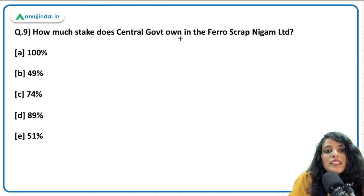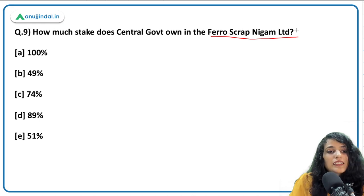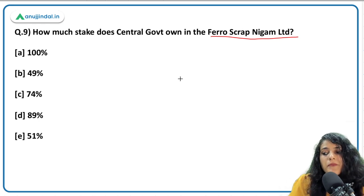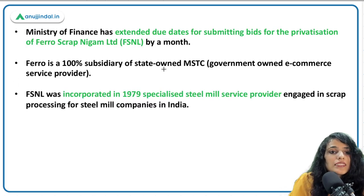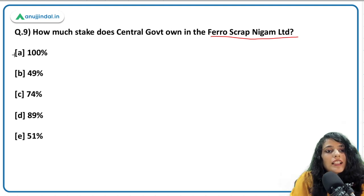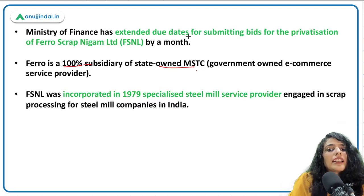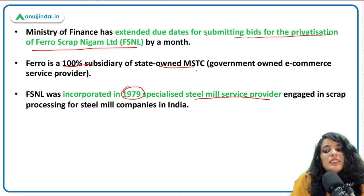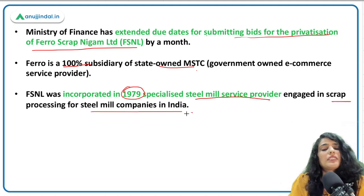The Ministry of Finance has extended the due date for submitting bids for the privatization of Ferro Scrap Nigam Limited, which is a 100% subsidiary of the state-owned MSTC — the government's e-commerce service provider. Ferro Scrap Nigam Limited was incorporated in 1979 as a specialized steel mill service provider engaged in scrap processing for steel mill companies.